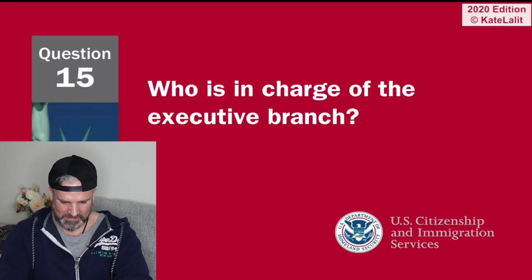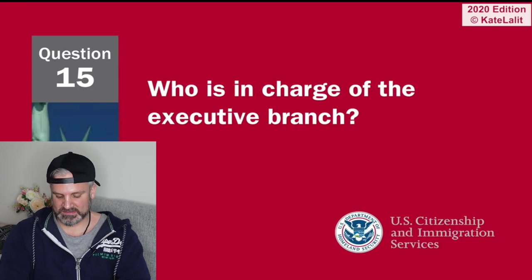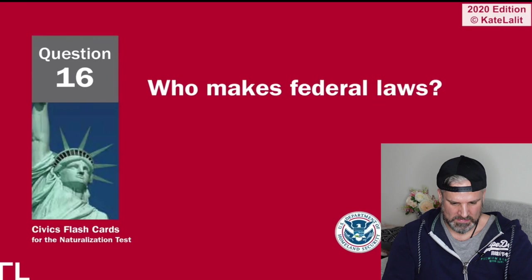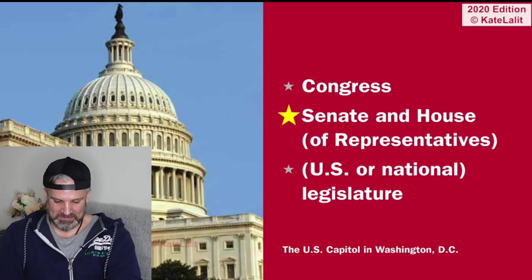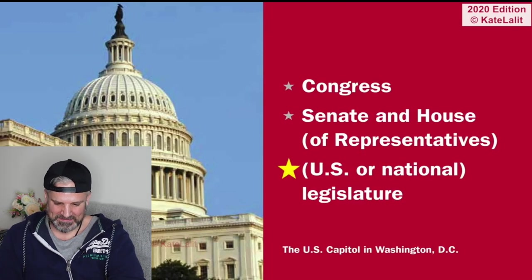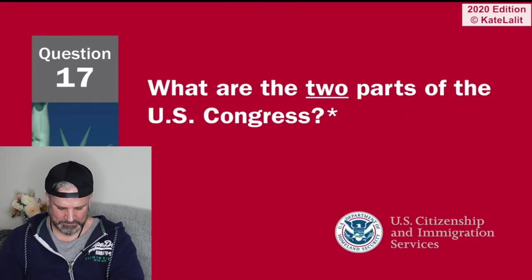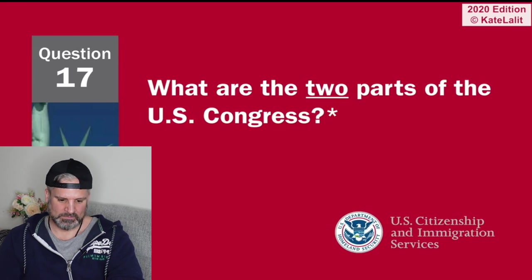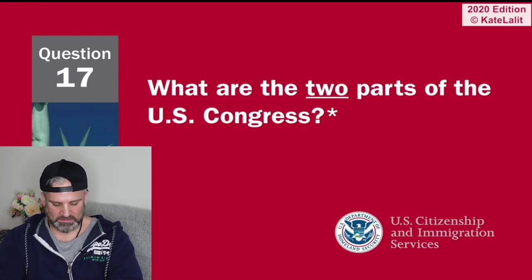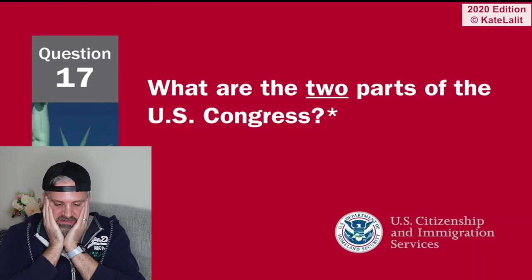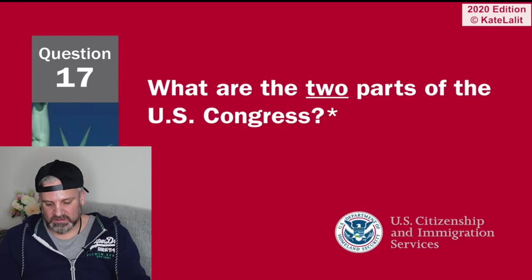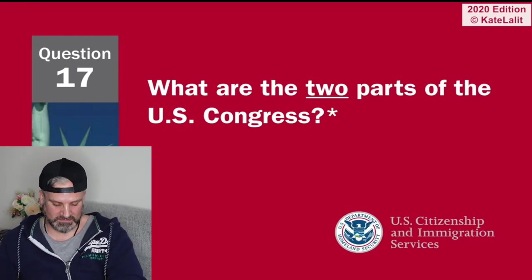Who is in charge of the executive branch? The president. Who makes federal laws? Congress — Senate and House of Representatives. What are the two parts of the US Congress? I don't understand it all — I'm gonna go president and vice president. Oh — the Senate and House of Representatives.